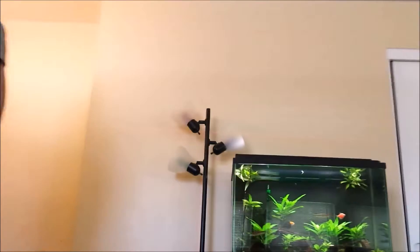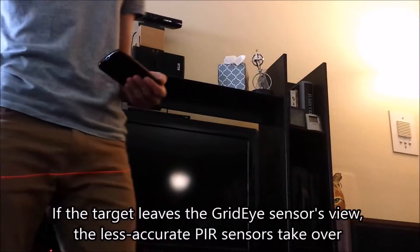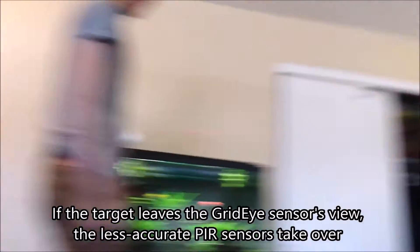If the target leaves the view of the Grid Eye sensor, there are 8 stationary PIR sensors on the side that detect motion, though they have limited accuracy.